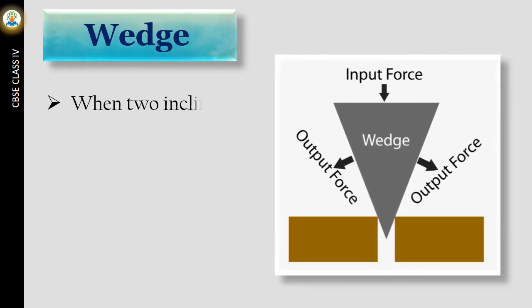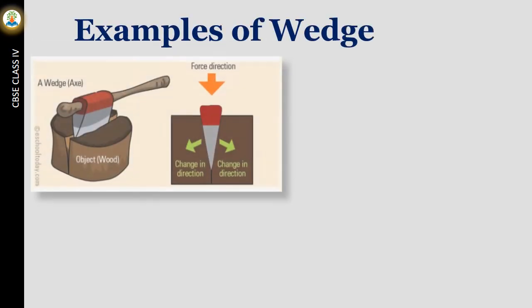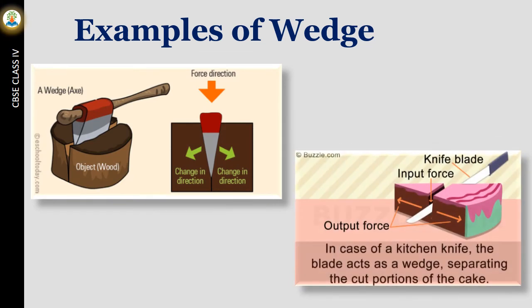When two inclined planes meet at a sharp pointed end, a wedge is formed. It is used to split open an object. The head of an axe and the cutting edge of knife are the examples of wedges.